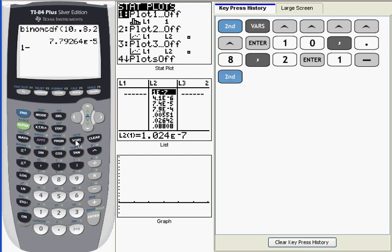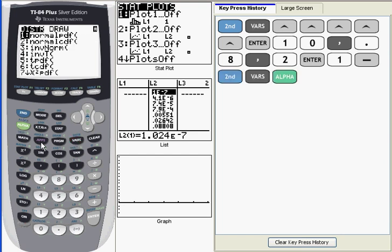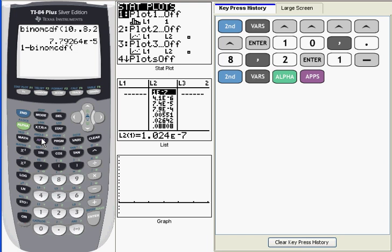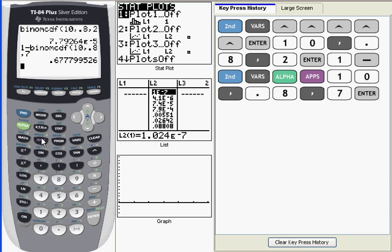I'm going to go grab my binomial CDF function out of the distribution menu again. And I give it n, p, 7. And now when I press enter, in one step it computes the sum of those individual probabilities and returns a result of about 68%.